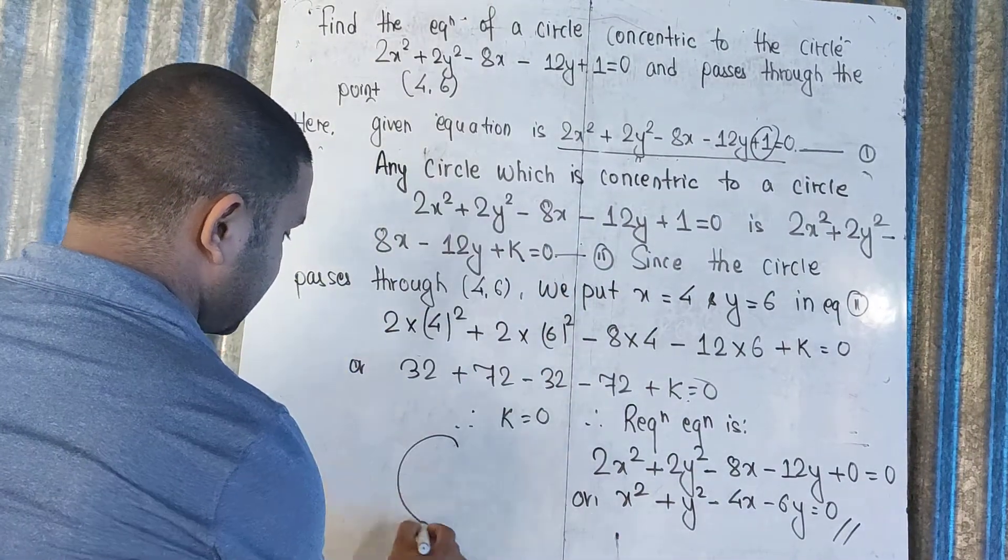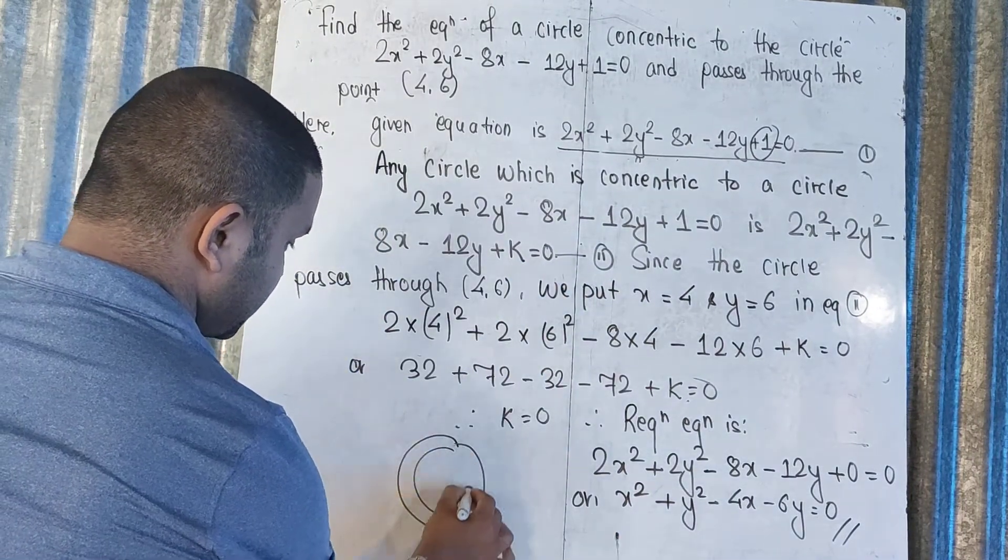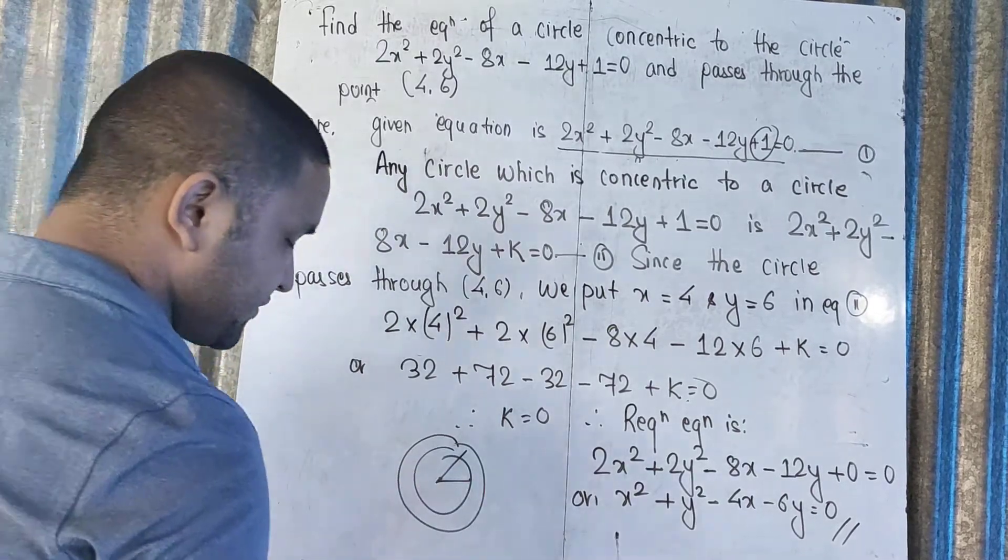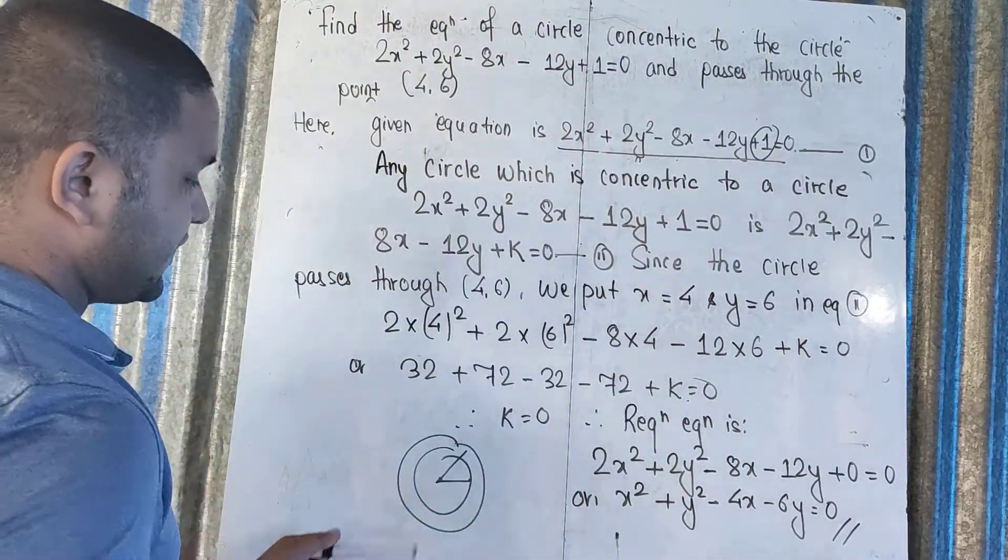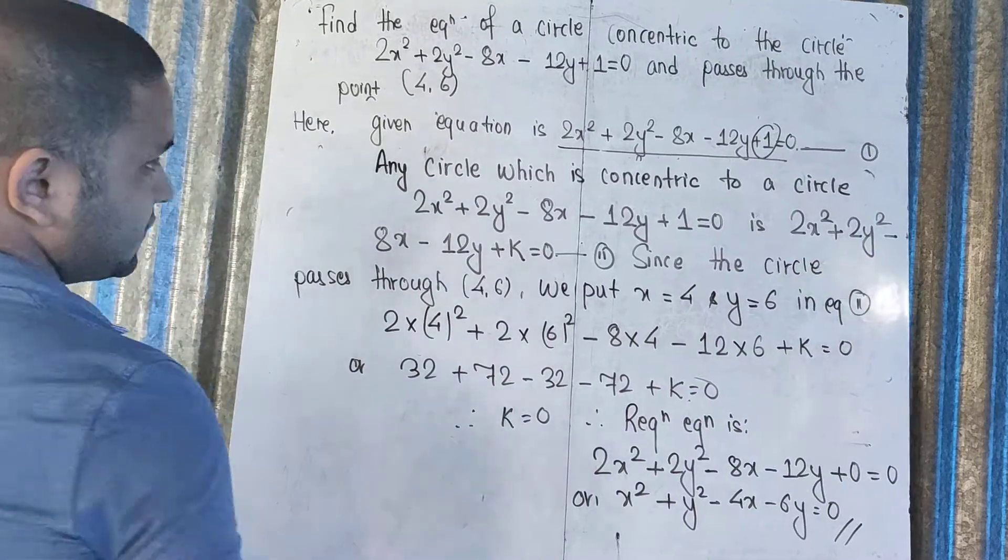It's the point of a concentric circle. This circle is concentric, and we are concentrating on the circle. Now, what happens?